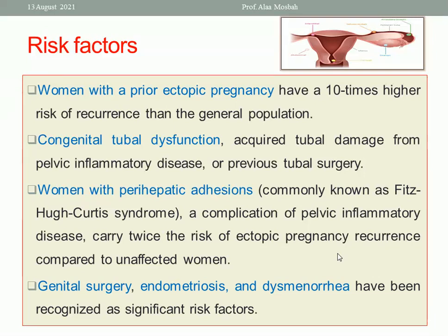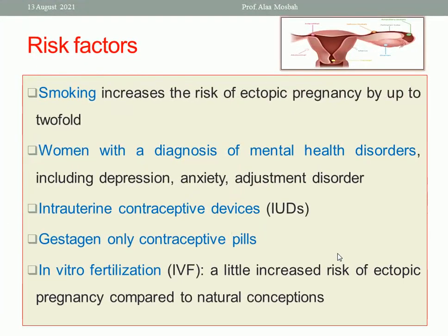Women with perihepatic adhesions — a syndrome called Fitz-Hugh-Curtis syndrome associated with pelvic inflammatory disease — carry twice the risk of ectopic pregnancy compared to unaffected women. Other important risk factors include genital surgery, endometriosis, and dysmenorrhea. Smoking increases the risk of ectopic pregnancy by up to 2.4 times.